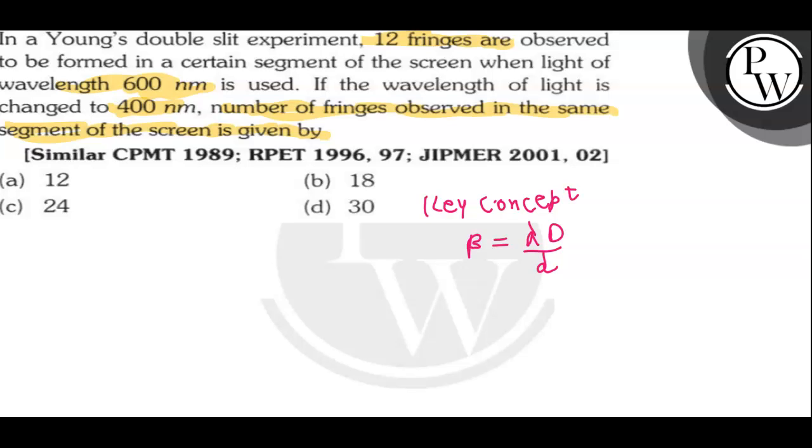Since two lights of different wavelengths are given in the question, we can say the fringe width of one wavelength must be equal to the fringe width corresponding to the other wavelength. This will conclude that n₁